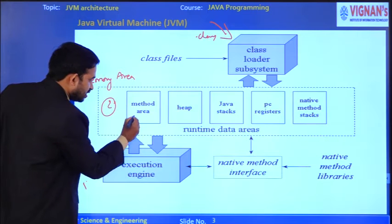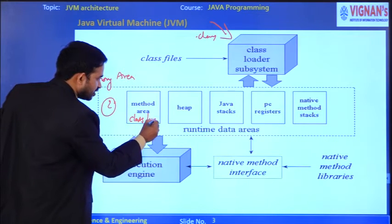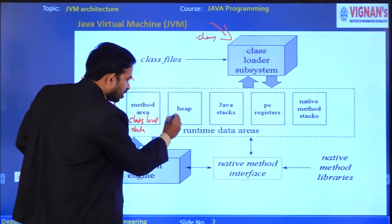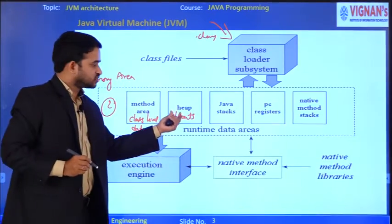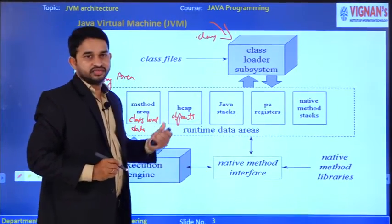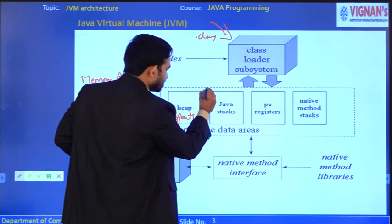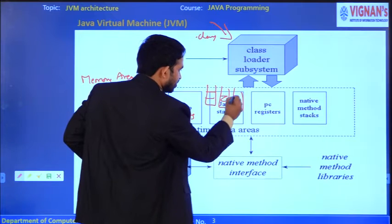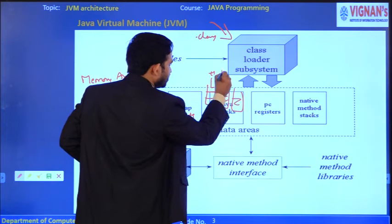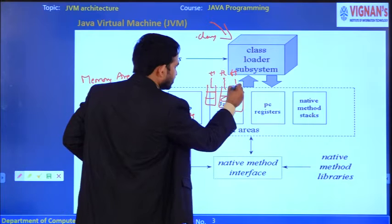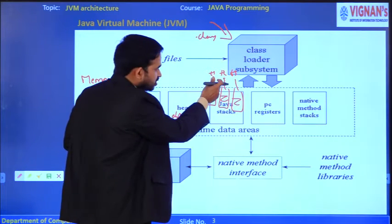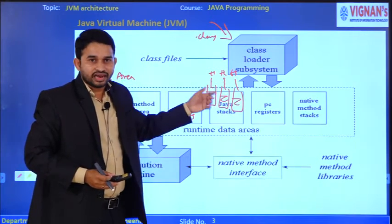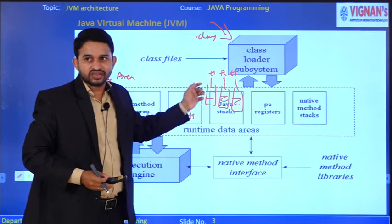The method area stores all class-level data. The heap area stores all objects — whatever objects are instantiated are stored in the heap area. Java stacks create a runtime stack for every thread: T1 thread gets its own individual stack, T2 thread gets another, T3 thread gets another — a runtime stack is allocated per individual thread.